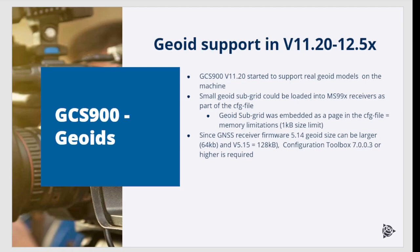The size limit for GeoEat files was just 1 KB. The size limit increased in later receiver versions, however most GeoEats are larger than 1 or even 128 KB. Therefore, they had to be subgridded, which meant that in TBC the user had to cut off the grid for the area of interest, meaning the design being worked on, and this implemented additional work and added complexity.